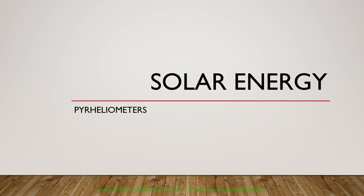We have basically two types of instruments: pyrheliometers and pyranometers. Pyrheliometers are used to measure direct radiation, that is the radiation coming directly from the sun, whereas pyranometers are used to measure the diffuse radiation, that is radiation coming from other parts of the sky.